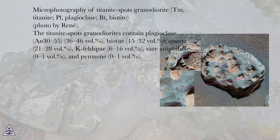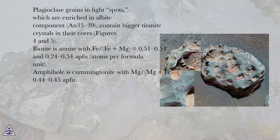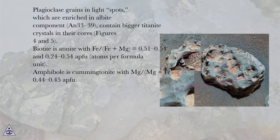Plagioclase grains in light spots, which are enriched in albite component (N3339), contain bigger titanite crystals in their cores, figures 4 and 5. Biotite is magnesian with Fe/(Fe+Mg) equals 0.51 to 0.54 and 0.24 to 0.54 APFU (atoms per formula unit). Amphibole is hornblende with Mg/(Mg+Fe) equals 0.44 to 0.45 APFU.